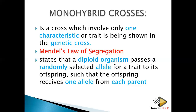Each parent gave you one allele. If you are tall, it means one parent gave you one allele for tallness and the other parent also gave you one allele for tallness. So if both parents gave you a dominant allele, then you are homozygous tall.